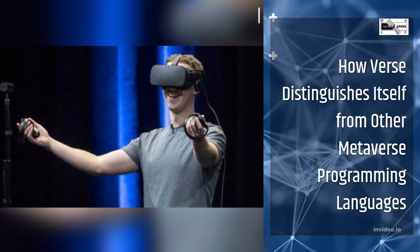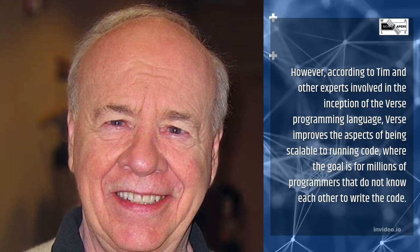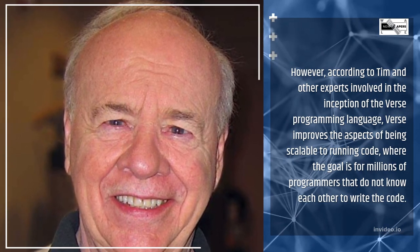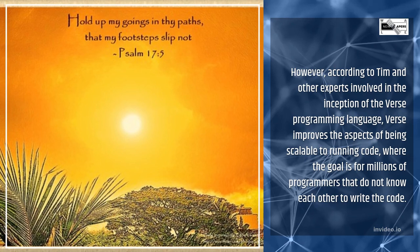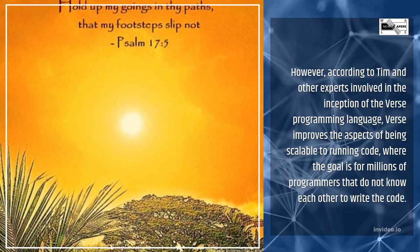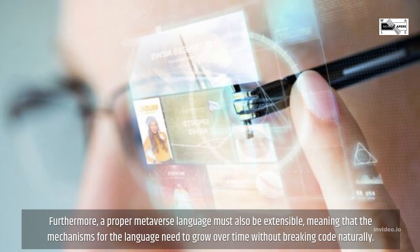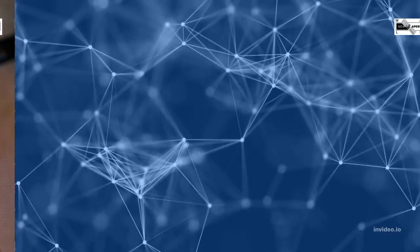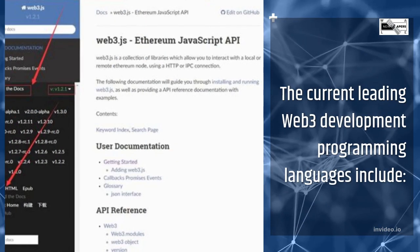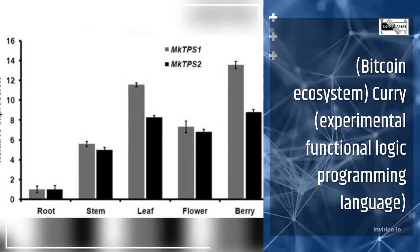According to Tim and other experts involved in the inception of the Verse programming language, Verse improves scalability to run code where the goal is for millions of programmers who do not know each other to write the code together. Furthermore, a proper metaverse language must also be extensible, meaning the mechanisms for the language need to grow over time without breaking code naturally. The current leading Web3 development programming languages include the Bitcoin Ecosystem and Curry, an experimental functional logic programming language.